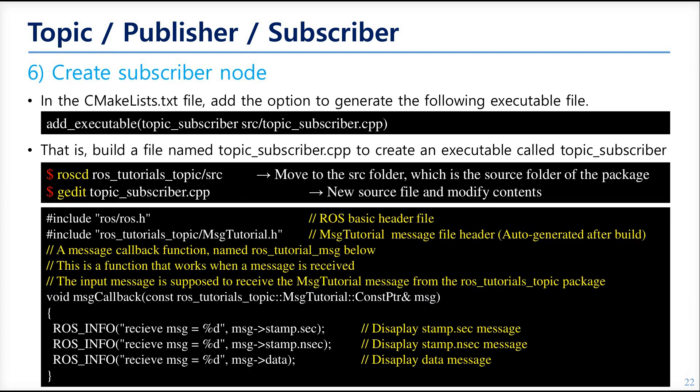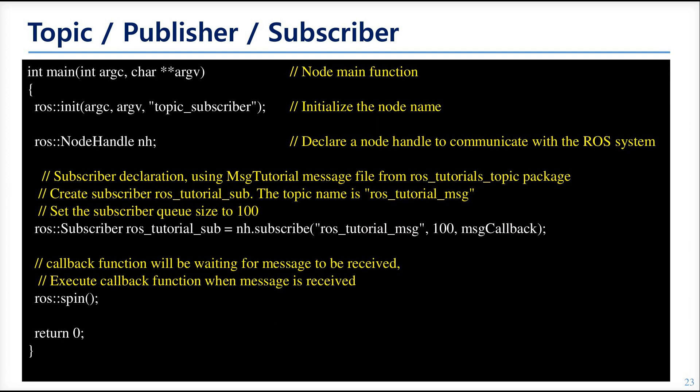Now we look at the subscriber node. What happens here is largely the same as in the publisher. The special part is the message callback function — when this function is called, it receives the message with data sent from the publisher. In the main function, almost everything is the same as the publisher side, but the different part is the subscriber declaration. The subscriber instance passes messages coming from the ros_tutorial_msg topic to the message callback function, so the function gets triggered.